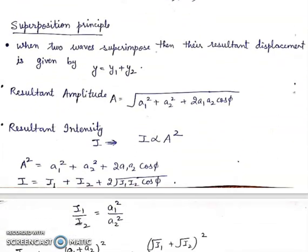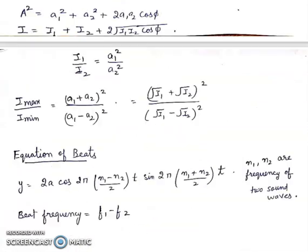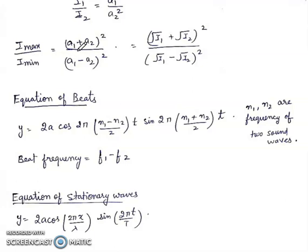Superposition principle: when two waves superimpose, the resultant displacement is y = y1 + y2. Resultant amplitude is A = √(A1² + A2² + 2A1A2 cos φ). Resultant intensity: I = I1 + I2 + 2√(I1I2) cos φ, since intensity is proportional to amplitude squared. Also, I1/I2 = A1²/A2², and I_max/I_min = (A1 + A2)² / (A1 − A2)².